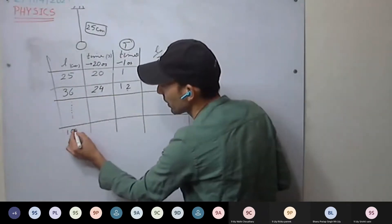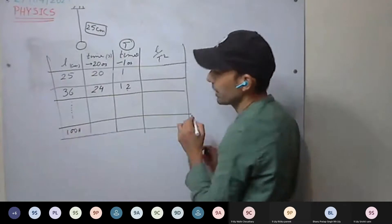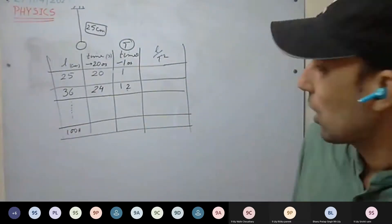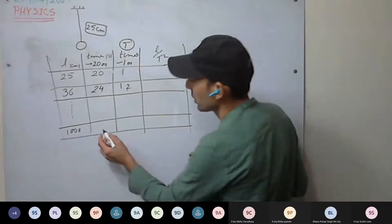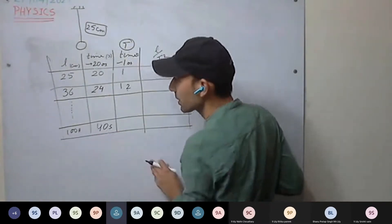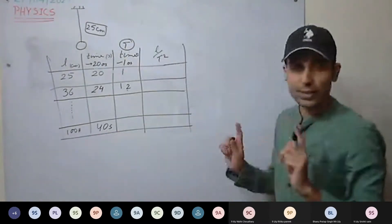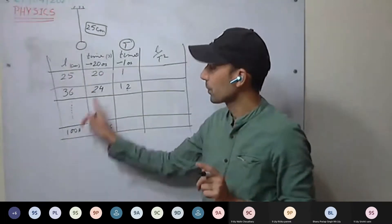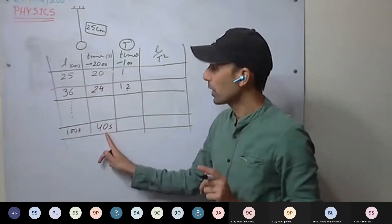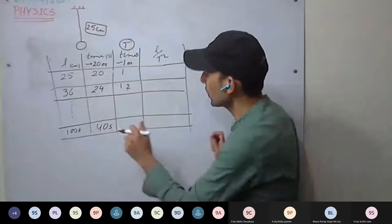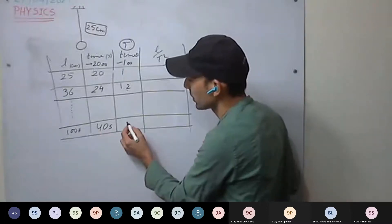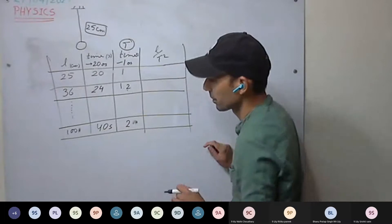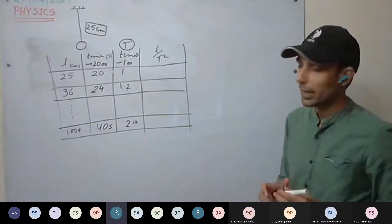Similarly, for 100 centimeters — that is one meter — the time taken for 20 oscillations is 40 seconds. You can see that as length is increasing, the pendulum is taking more time to complete one oscillation. The time period is 2 seconds.